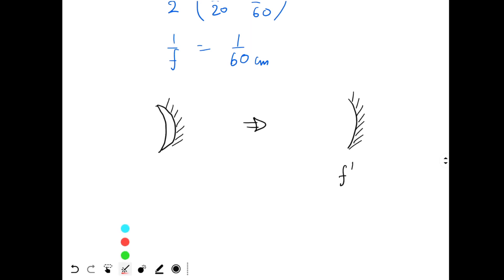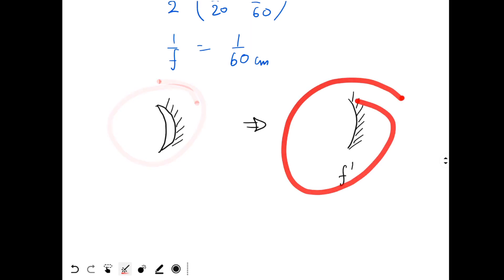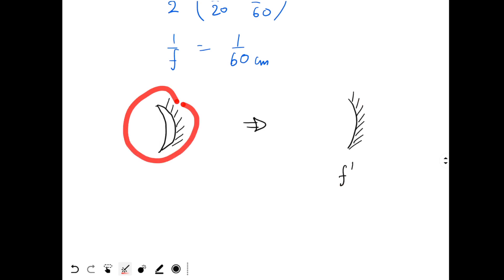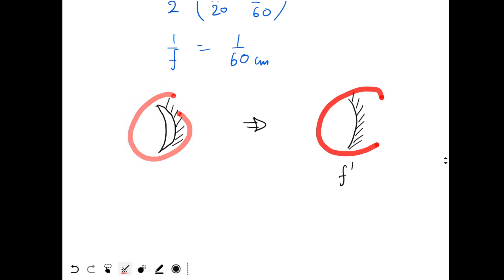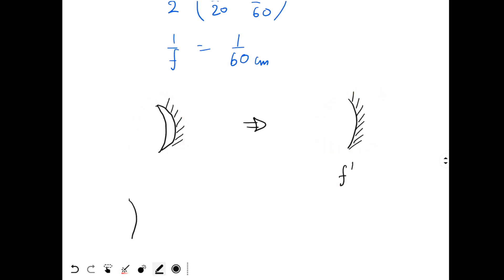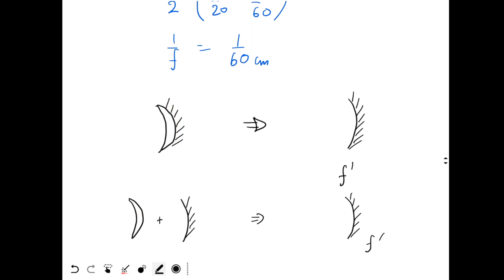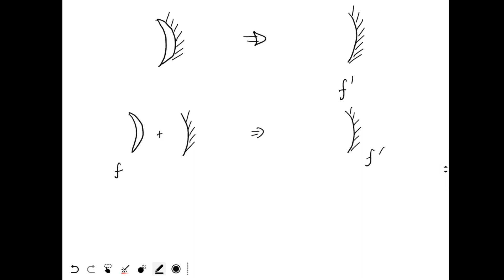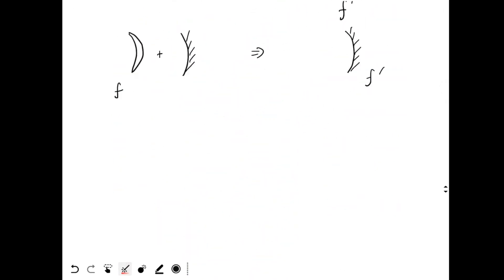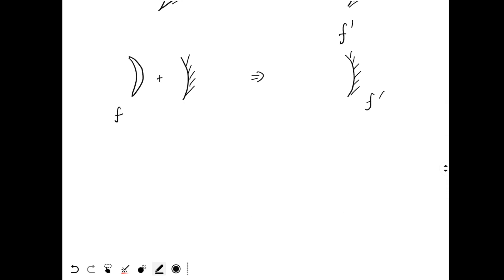The total power of this system should equal the power of the equivalent concave mirror. I want to find the power of this lens-plus-mirror system. For that, I draw the mirror part and the lens part separately. The combination of these two should give the equivalent mirror of focal length F dash. For the mirror part, the radius of curvature is 20 cm, so its focal length is 20/2 = 10 cm.